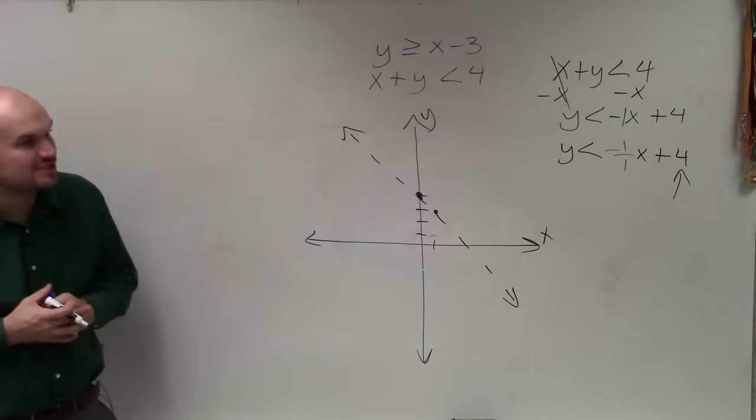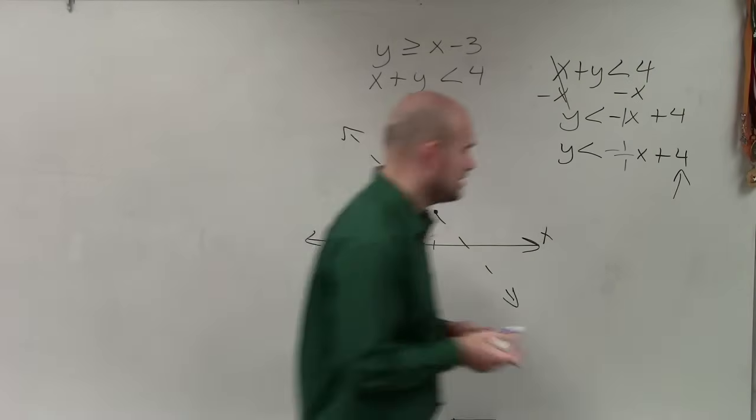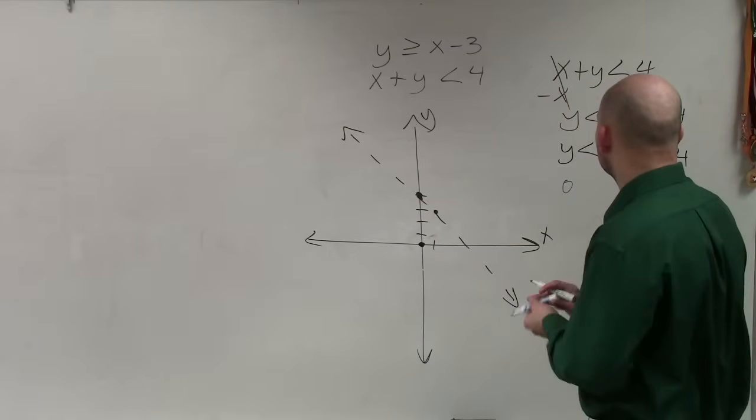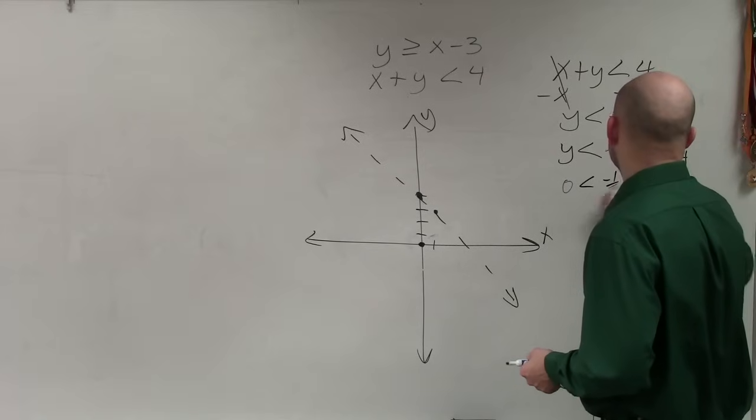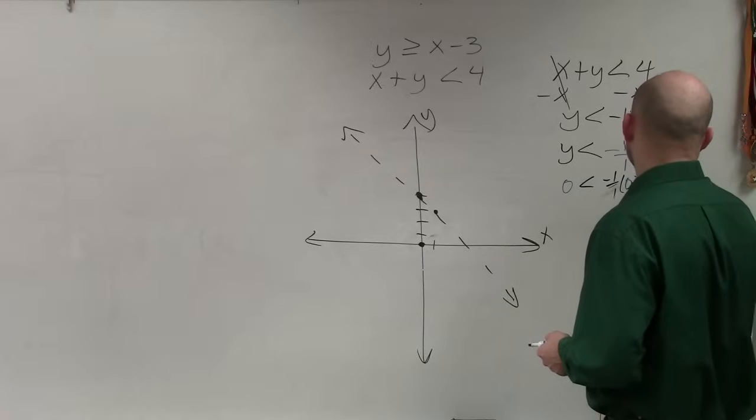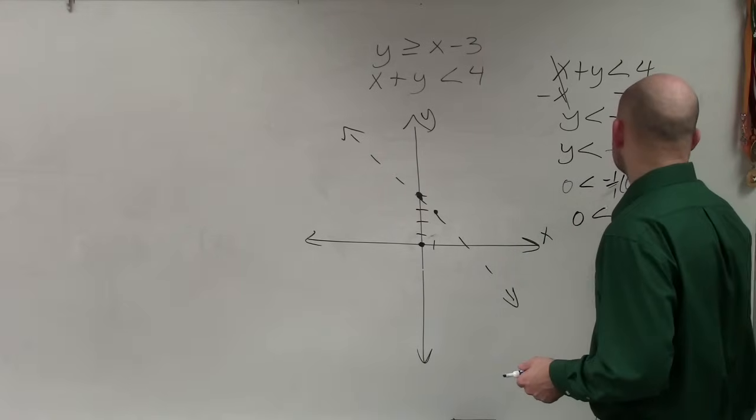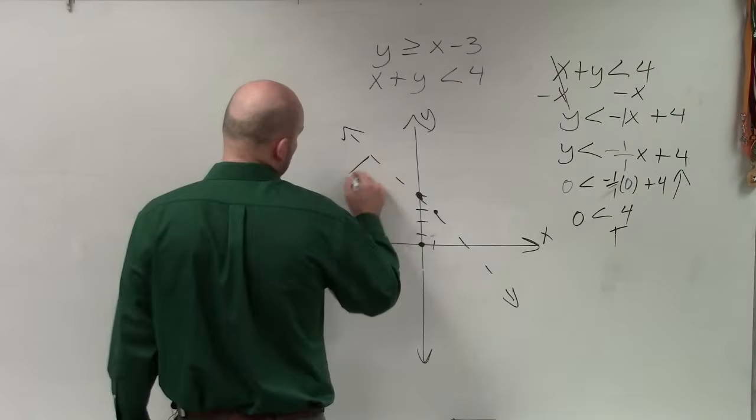And then the last thing I'm going to do is use shading. So I'll pick 0, 0, or I test. I'll pick 0, 0, and I'll just plug in 0 in for x. And I get 0 is less than 4, which is true. So since that is true, I am going to shade below.